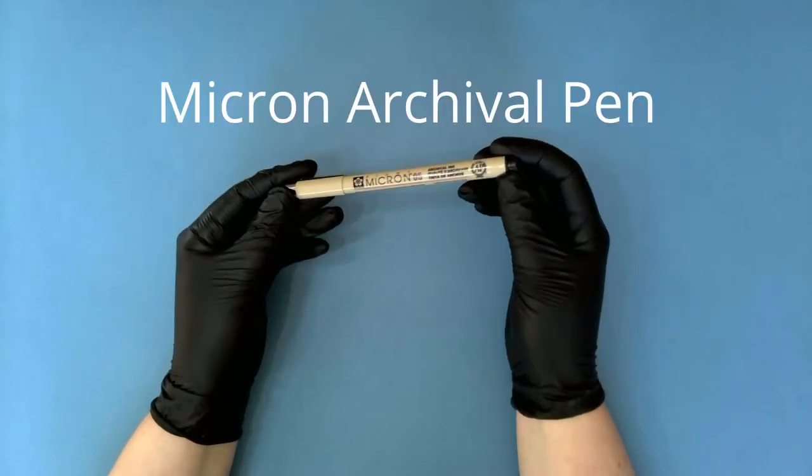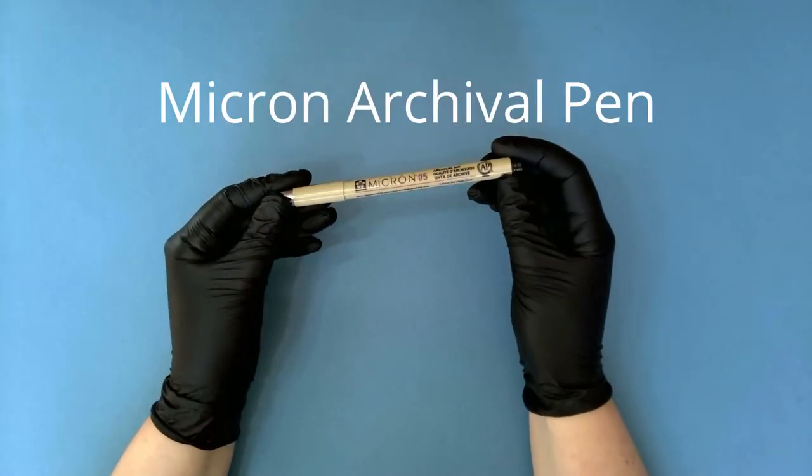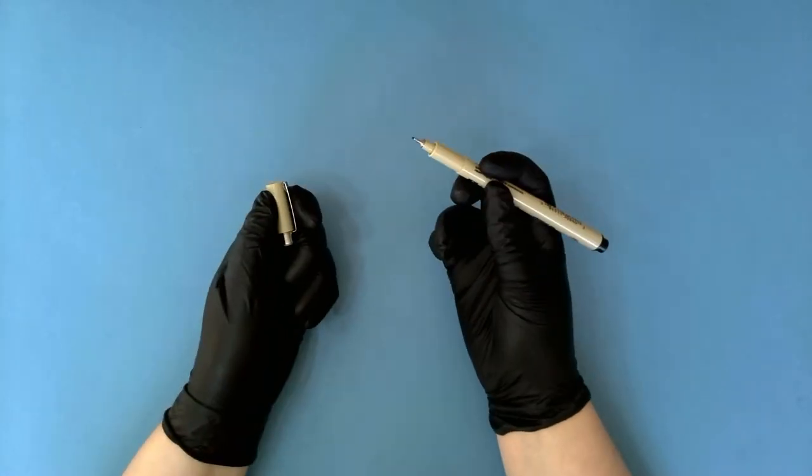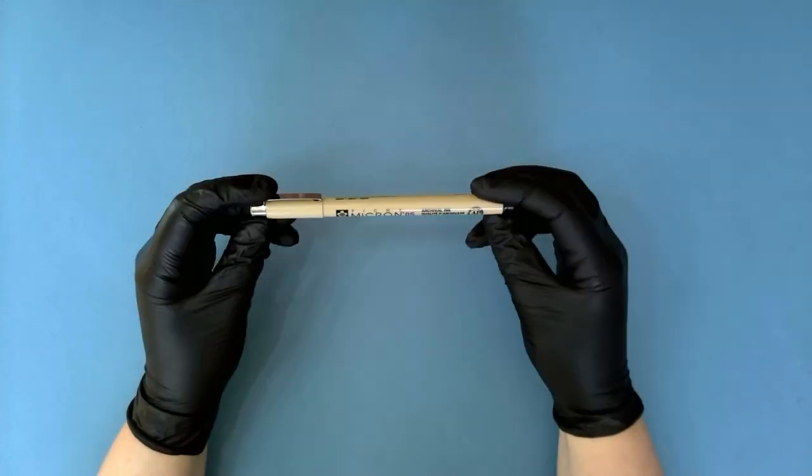To write on your tag you can use a micron ink waterproof archival pen. It has a nice small nib and it is very clear and concise to write with.